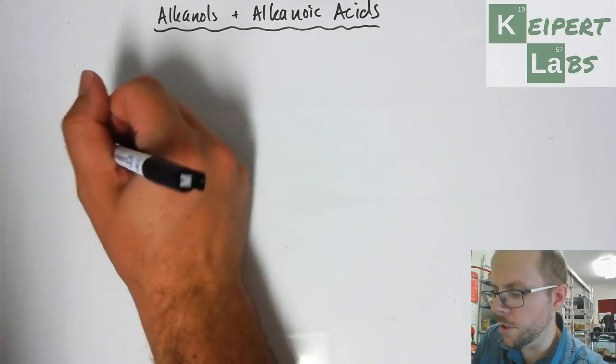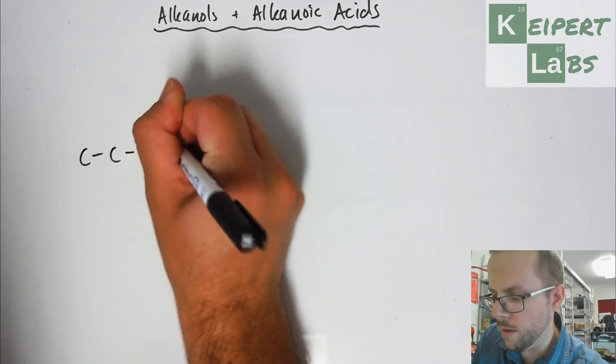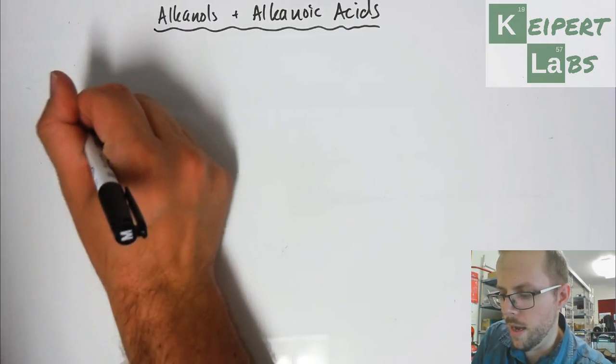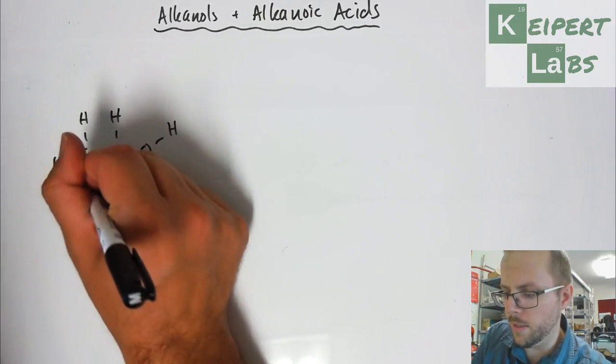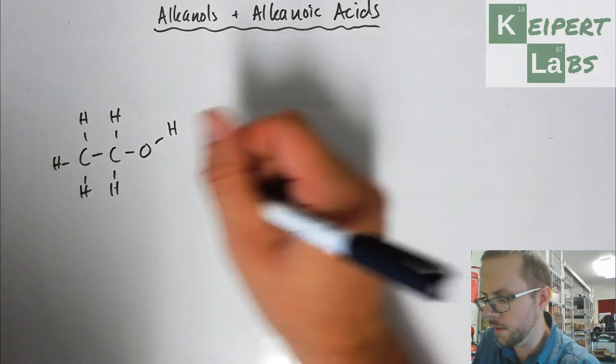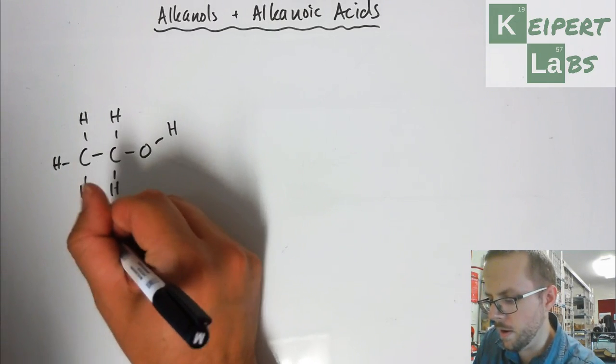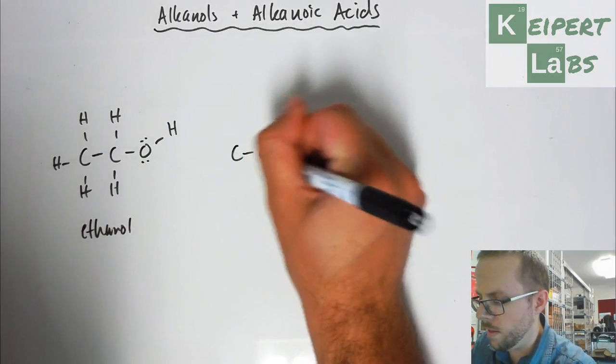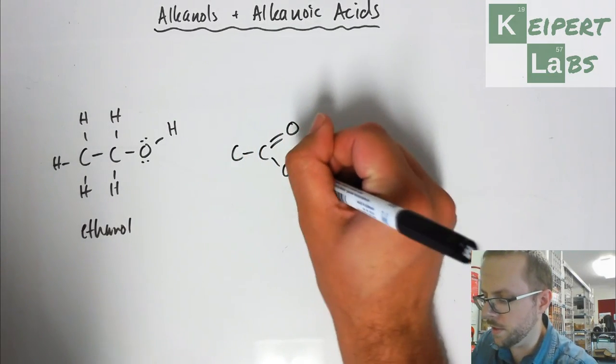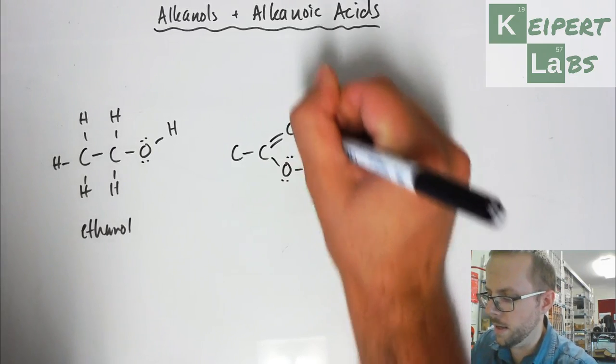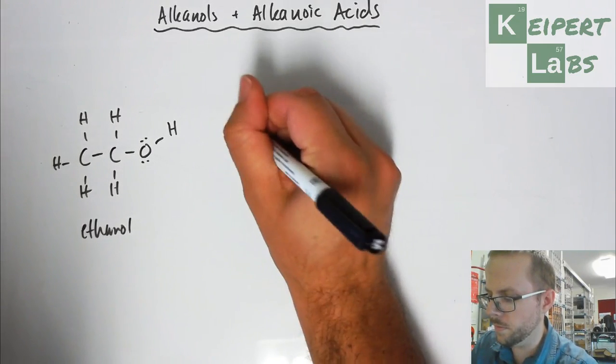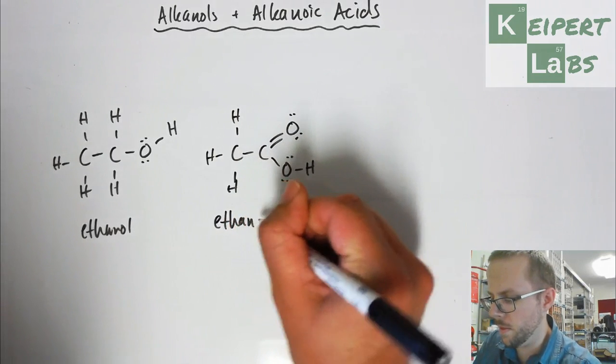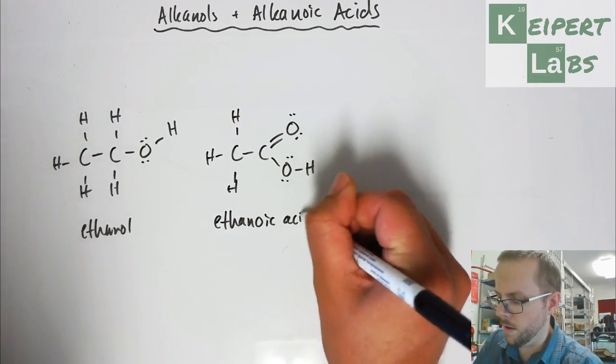I'm going to just take a moment to draw the structures of ethanol and ethanoic acid. I'm going to draw ethanol, and we have a lone pair on our oxygen here. This is the structure of our acetic acid or ethanoic acid.